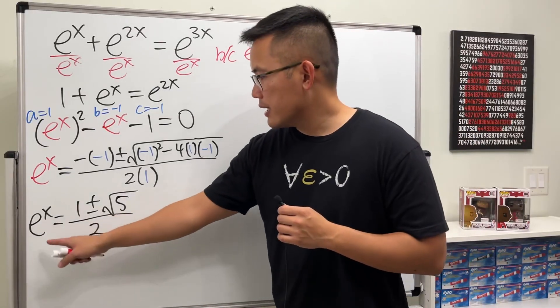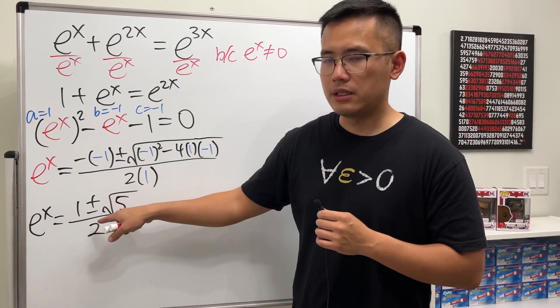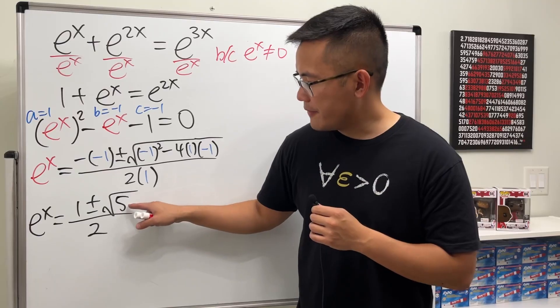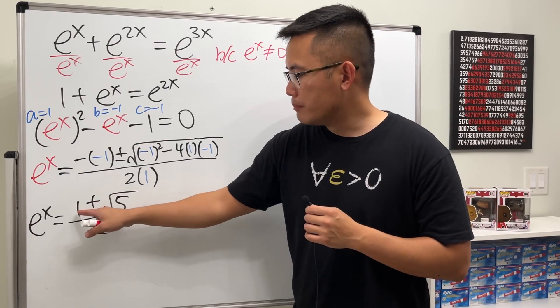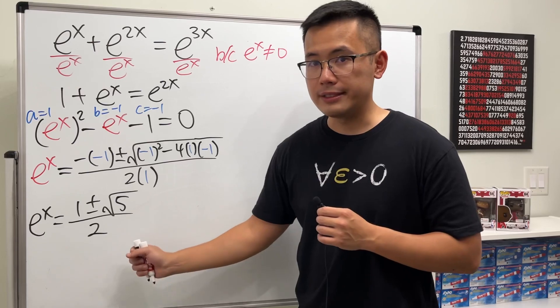Here's the thing. e^x is equal to this, where the plus or minus square root of 5 is bigger than 1. If we do 1 minus square root of 5, we'll end up with a negative value on the right-hand side.